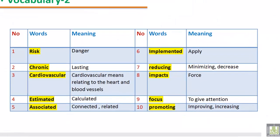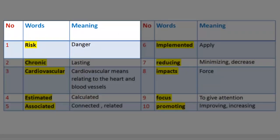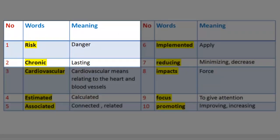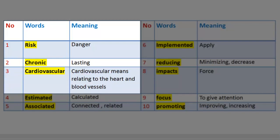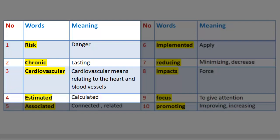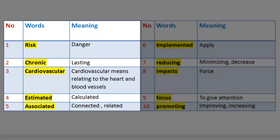Vocabulary 2. Number 1. Word: Risk. Meaning: Danger. Number 2. Word: Chronic. Meaning: Lasting. Number 3. Word: Cardiovascular. Meaning: Relating to the heart and blood vessels. Number 4. Word: Estimated. Meaning: Calculated. Number 5. Word: Associated. Meaning: Connected, related.